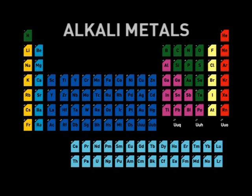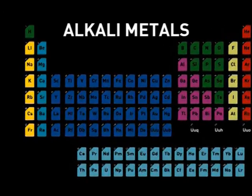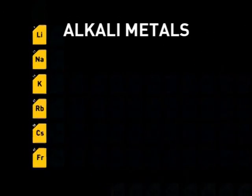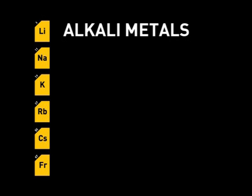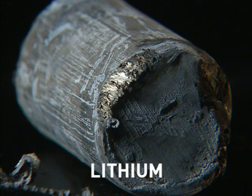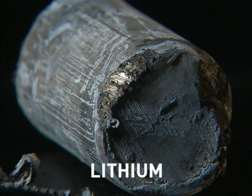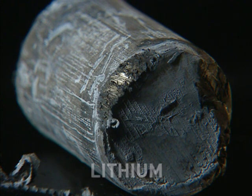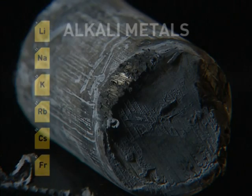Let's look at the alkali metals of Group 1. They are so reactive that they are never found uncombined in nature. Pure samples have to be stored under oil or gas so they won't react and form compounds with air or water.